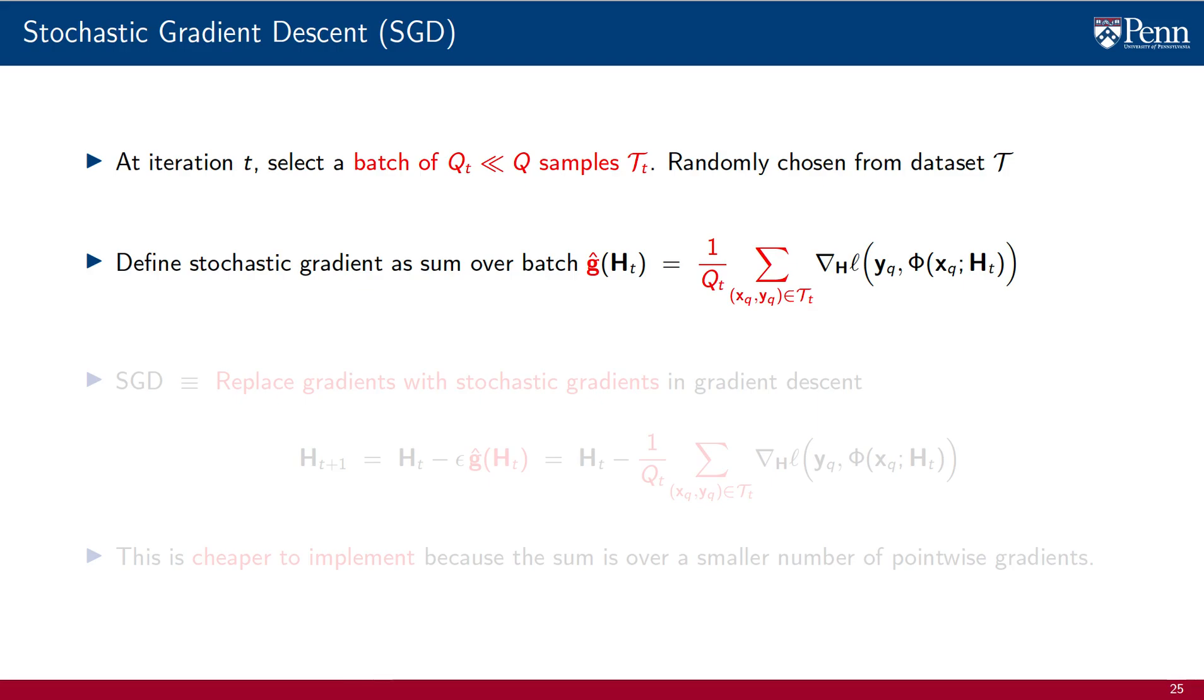We now define the stochastic gradient, hat g, as an average of pointwise gradients over the batch set. This is misleadingly similar to the regular gradient. The only difference is the set over which we sum pointwise gradients. But the sets over which we sum are very different. The gradient set has all of the q samples. The stochastic gradient set has a batch of q_t samples, which are much smaller in number and chosen at random from the training set.